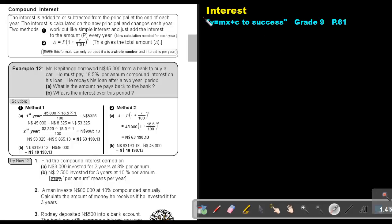Part 9. We are going to continue with interest. You will find this on page 61 in the Namibia Mathematics Grade 9 textbook, Y equals MX plus C to success. We are going to focus on compound interest. The interest is added to or subtracted from the principle at the end of each year. The interest is calculated on the new principle and change each year.